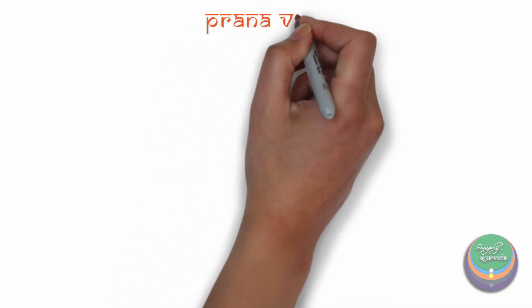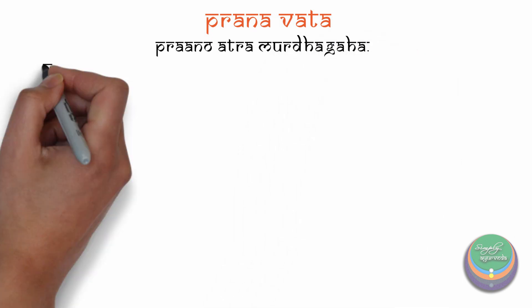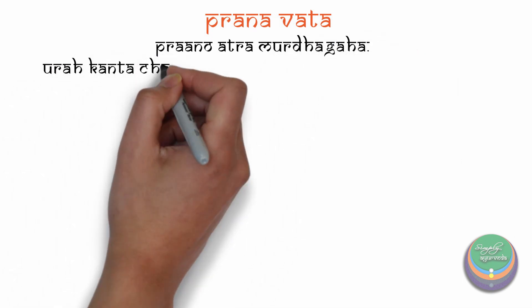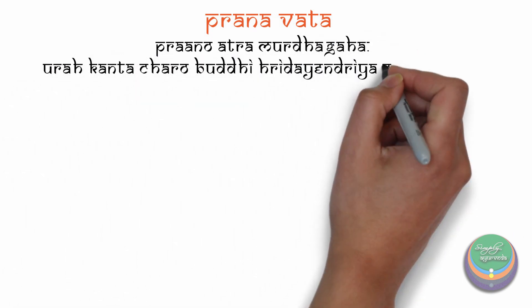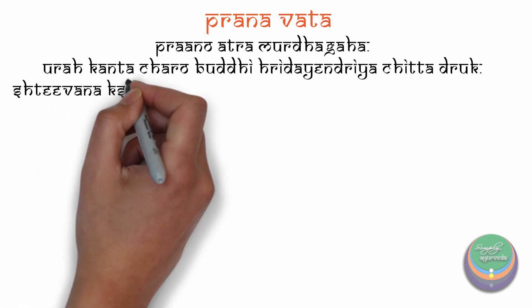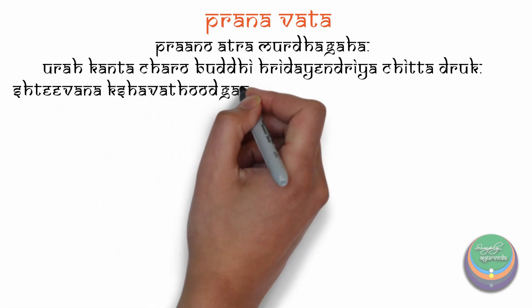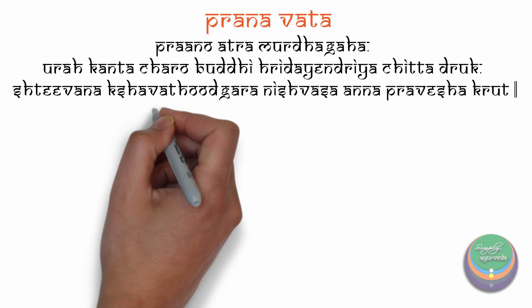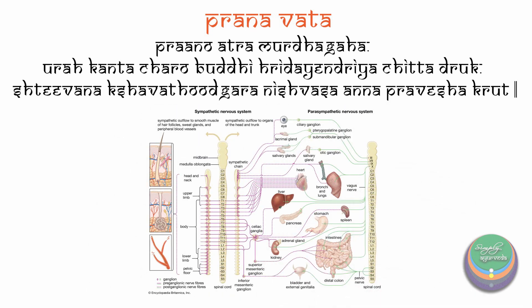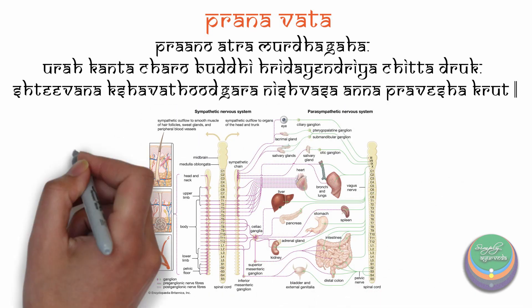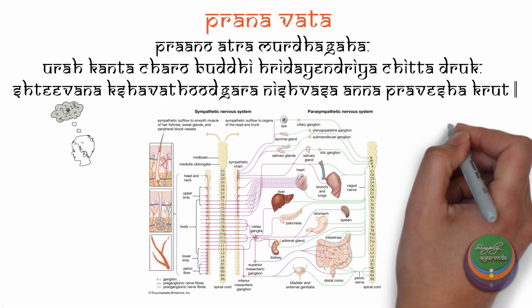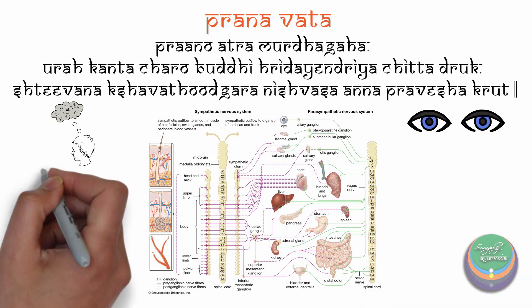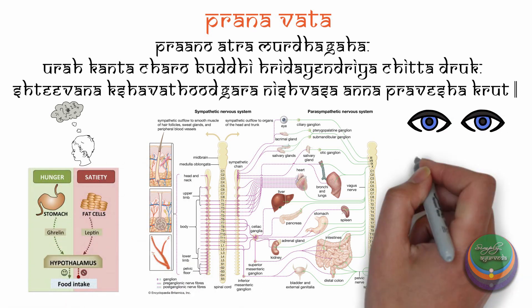The explanation of Pranavata goes as follows: Pranavata Murdhaka Urakkanta Charo Buddhi Hrdeyendriya Chittadrik, Shteevanakshavatodghara Nishvasanapraveshakrith. This can be understood as a collection of autonomic functions which include thought process, sensory perception, hunger, respiration, deglutition, etc.